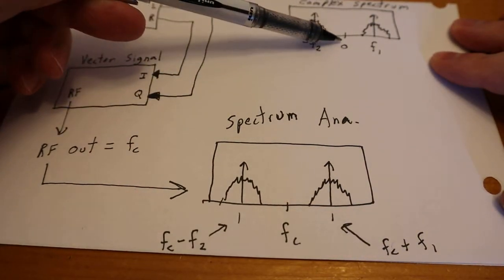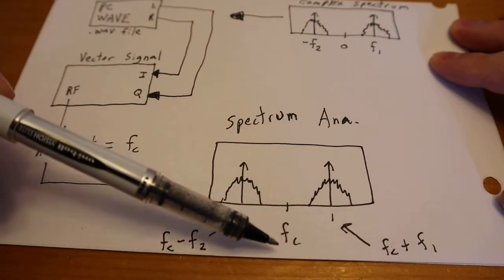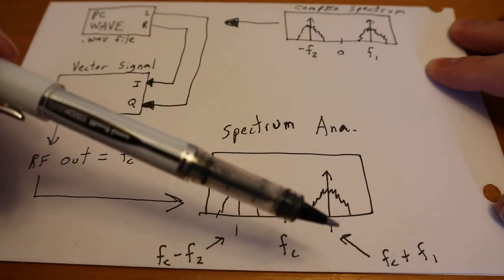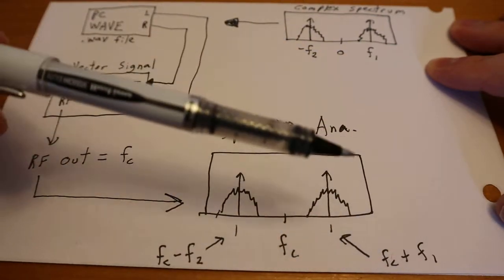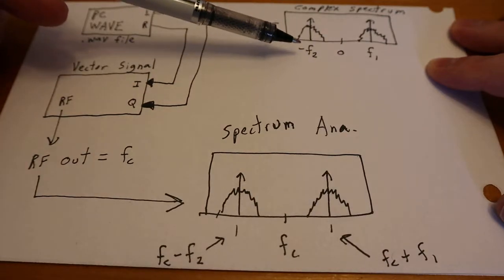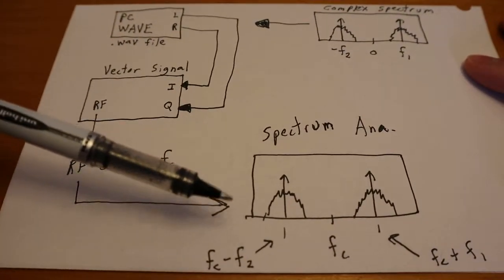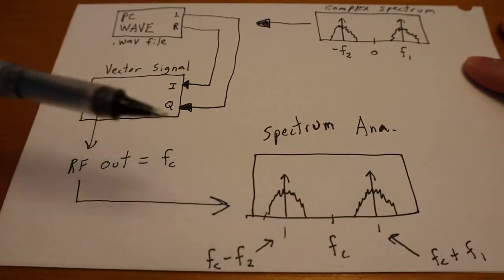The DC up here is now going to be at FC. And this frequency offset, F1, is now going to be FC plus F1. And this frequency offset, negative F2, is going to be FC minus F2.